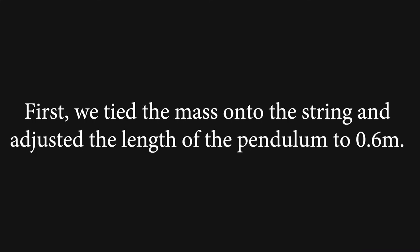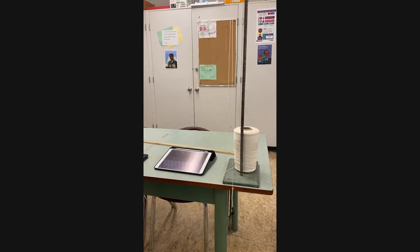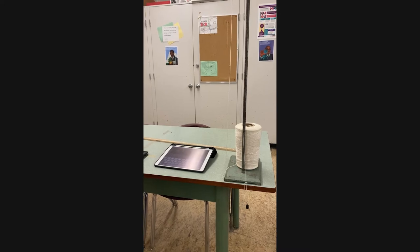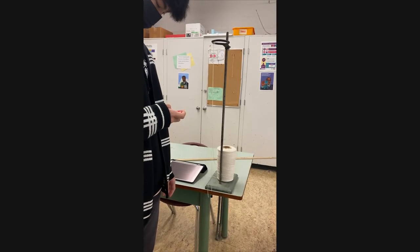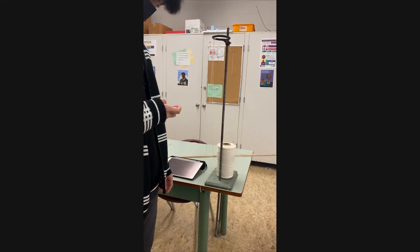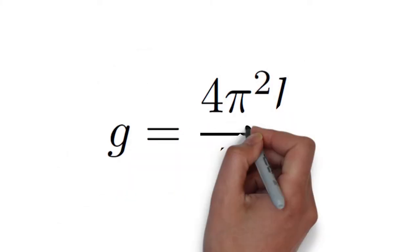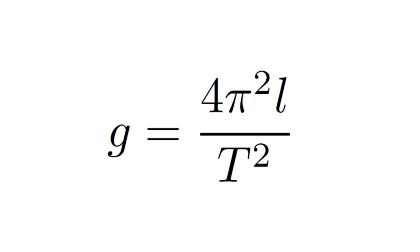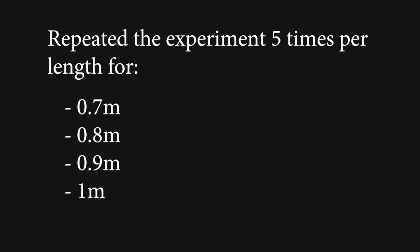We tied the mass onto the string and adjusted the pendulum length to 0.6 meters. We released the pendulum at an angle under 10 degrees so that theta in radians is approximately equal to its sine ratio. Before taking measurements, we waited for the pendulum to enter simple harmonic motion. Using a stopwatch, we measured five periods in seconds and divided by five to find a single period — timing five periods minimizes human reaction time per period. We substituted our data into g equals 4π²l over t squared, then repeated the experiment five times per length for four more lengths: 0.7, 0.8, 0.9, and 1 meter, totaling 25 trials.